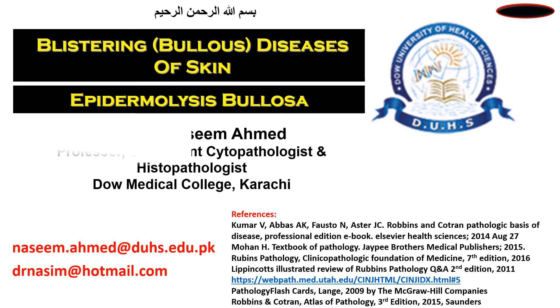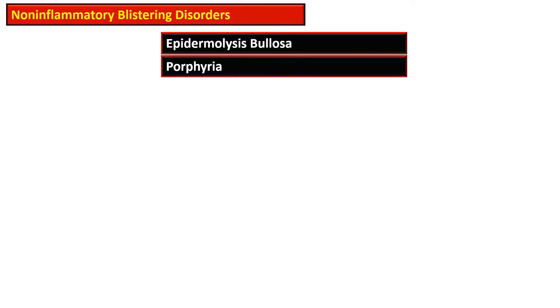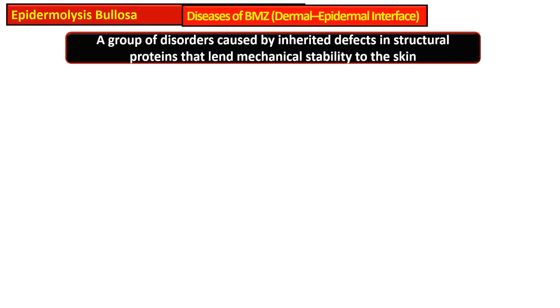This series covers blistering or bullous diseases of the skin. This video specifically covers Epidermolysis Bullosa. Among the non-inflammatory blistering disorders, there are two entities: Epidermolysis Bullosa and Porphyria. Epidermolysis Bullosa is a disease of the dermo-epidermal junction or basement membrane zone — a group of disorders caused by inherited defects in structural proteins that give mechanical stability to the skin.